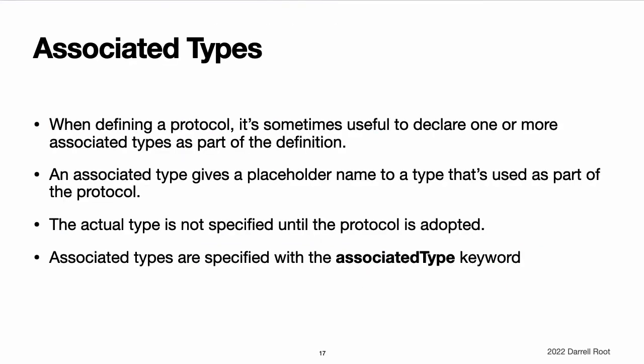Associated types. When defining a protocol, it is sometimes useful to declare one or more associated types as part of the protocol's definition. An associated type gives a placeholder name to a type that is used as part of the protocol. The actual type to use for that associated type is not specified until the protocol is adopted. Associated types are specified with the associatedtype keyword.